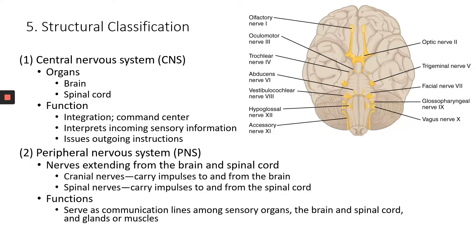Next we're going to look at some more specific structures instead of just abstract general functions. The function of the CNS — the brain and spinal cord — is basically the command center: integrating information, processing information, and sending out outgoing instructions through which division? The two options are the sensory or motor division.